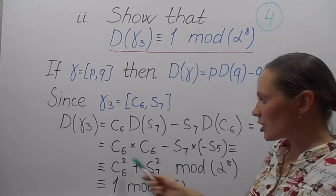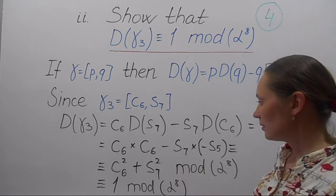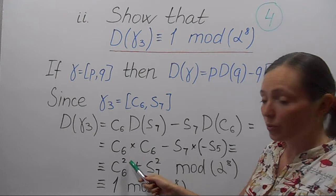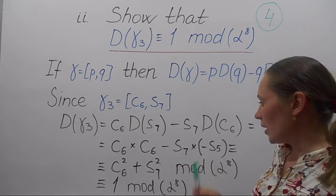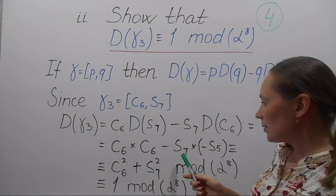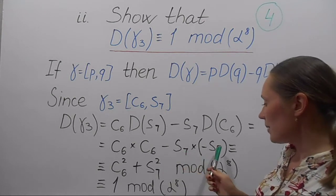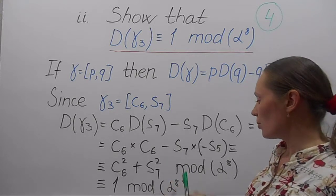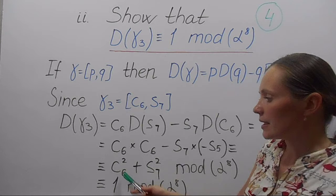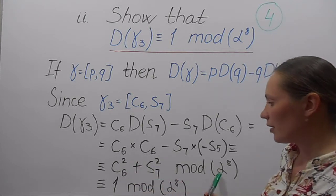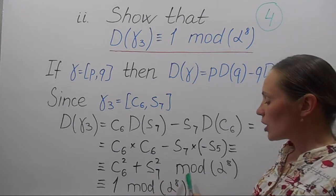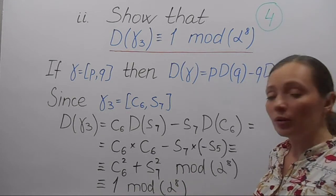Therefore, the area differential is C6 times C6 plus S7 times S5, since the two minuses give a plus. C6 times C6 is C6 squared, and one can check that S7 times S5 is congruent to S7 squared mod α8. Therefore, the whole expression is congruent to C6 squared plus S7 squared mod α8. From the previous part of this problem, we see that this expression is the same as 1 mod α8.